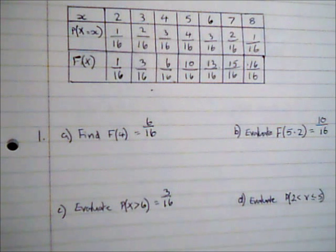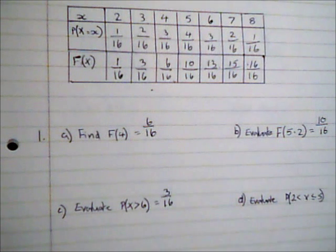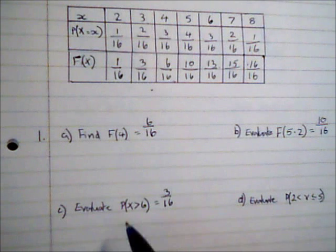So this final one. The probability that x lies between 2 and 5, and here it can include 5 as well. Here it can't. So basically I'm looking at 3, 4 and 5. So again I can take a similar approach to here.